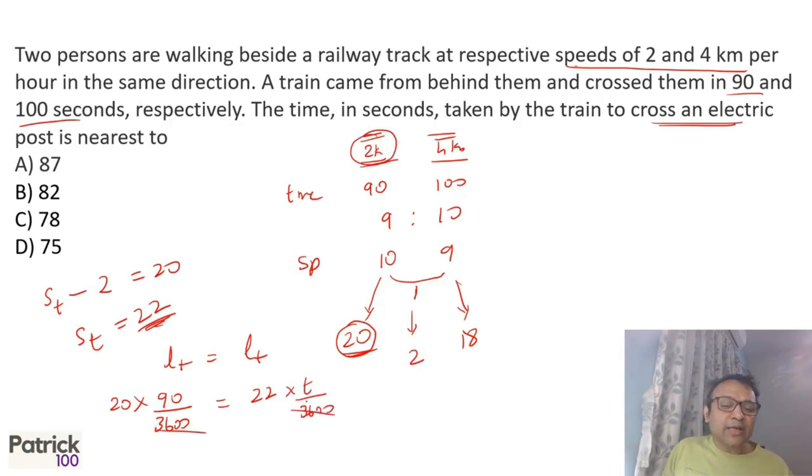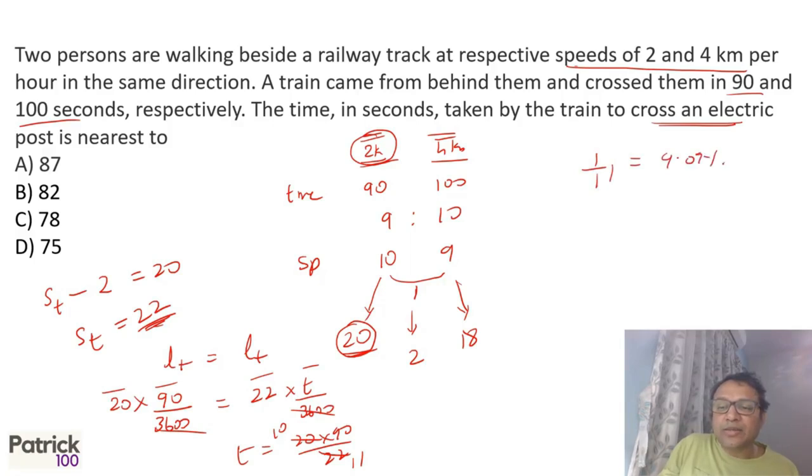Technically you need not even write 3600 because both sides the units are the same: seconds and km/hr. You can directly solve. So you'll get t = (20 × 90) ÷ 22, which is 10/11. You should know 1/11 is 9.09%, so 9/11 will be 81.81%. So which will give you 82 as the answer, because we have 900 ÷ 11 which will be 81.81 or 82 as the answer in this case.